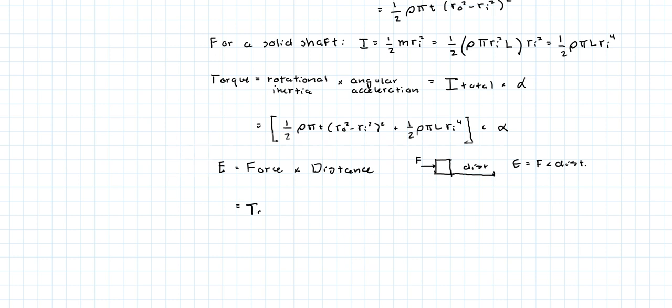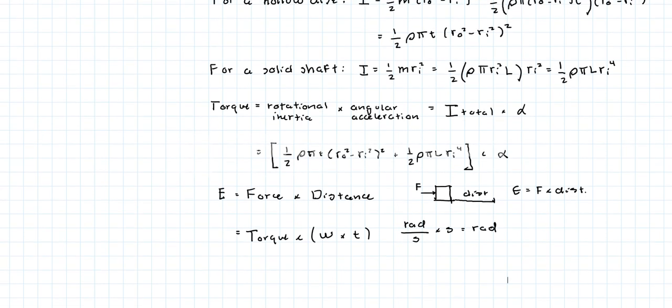Okay, what about in terms of rotational coordinates? So that would be force is torque. And the distance is the angular velocity times time. The reason for that is the units of velocity would be rads per second times seconds, giving us rads. So that would be the equivalent of the distance.